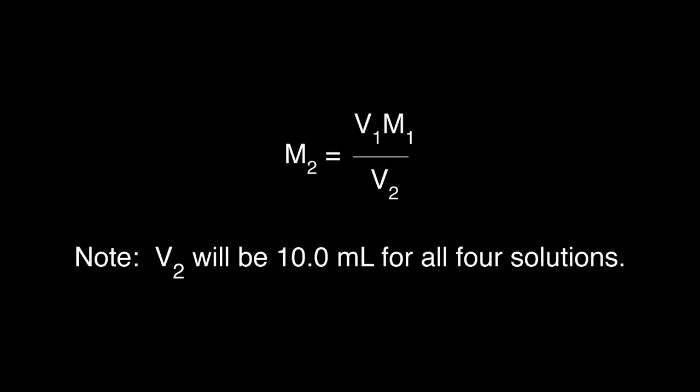To determine the initial concentration of iron-3-plus and thiocyanate, use M1V1 is equal to M2V2 to determine the new molarity after mixing all solutions together. Note, V2 will be 10.0 milliliters for all four solutions.